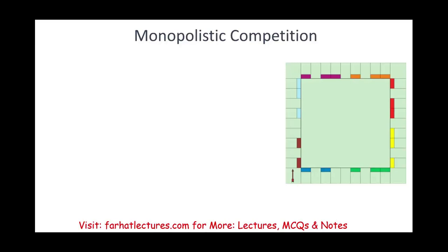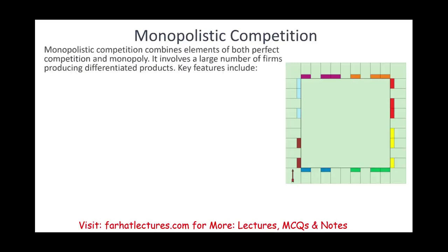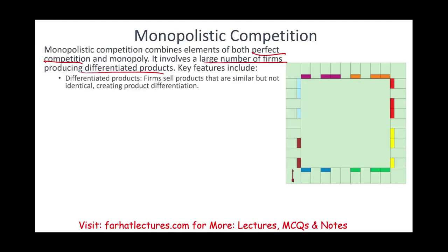Then we have monopolistic competition, which combines both perfect competition and monopoly — something in between. It involves a large number of firms producing differentiated products. Firms sell products that are similar but not identical, creating some sort of product differentiation. When you think of monopolistic competition, think of the fast food industry — McDonald's, Burger King, Wendy's. They operate in a monopolistic competition, selling the same types of products — burgers, food, soda, french fries — but they try to differentiate themselves.